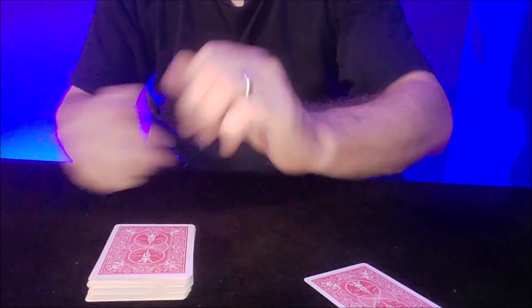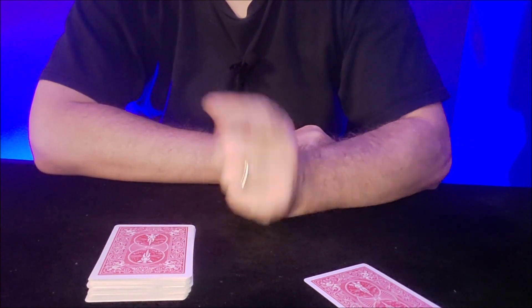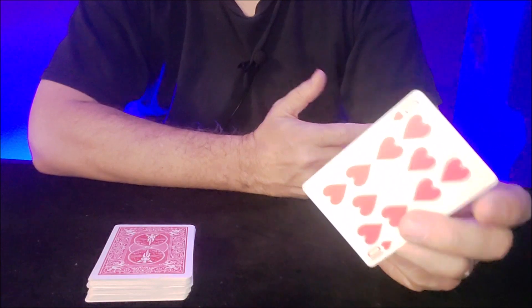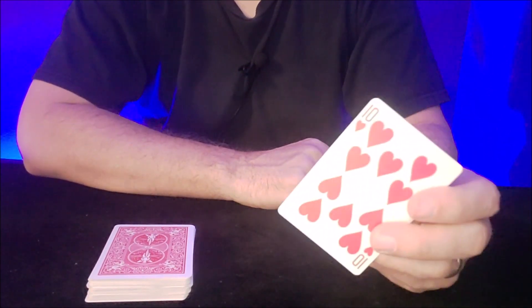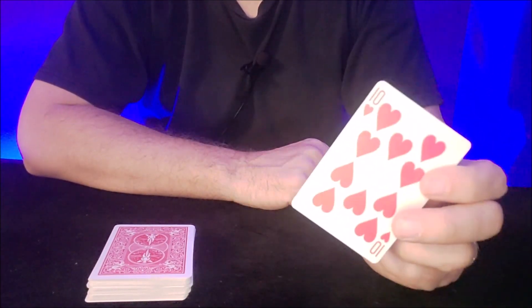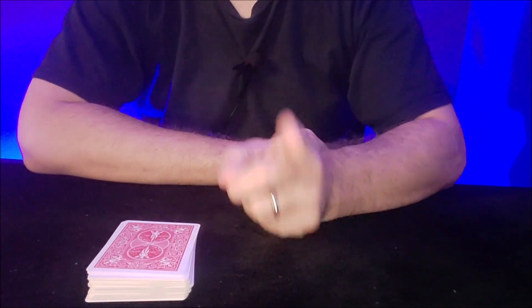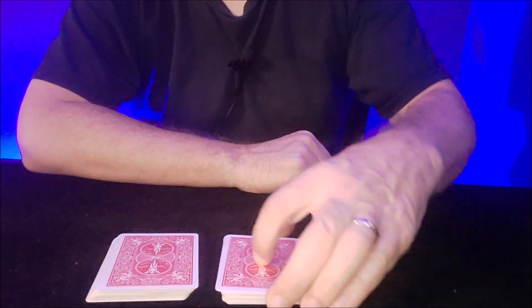Then you're going to place the deck down in front of them. They've looked at their card. Their card is a 10 of hearts, but you don't know that. In fact, you will never know their card. Instruct them to place the card on top, and then instruct them to cut and complete the cut.